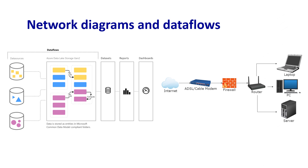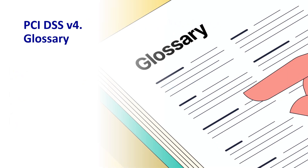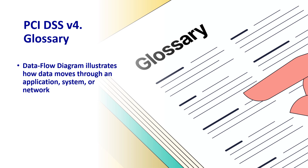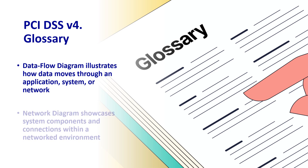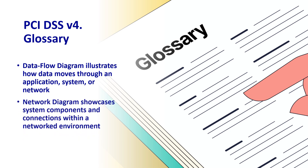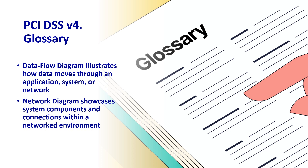Let's start from the ground up, as defined in PCI DSS v4. According to the PCI DSS glossary, a data flow diagram illustrates how data moves through an application, system, or network. On the other hand, a network diagram showcases system components and connections within a networked environment.